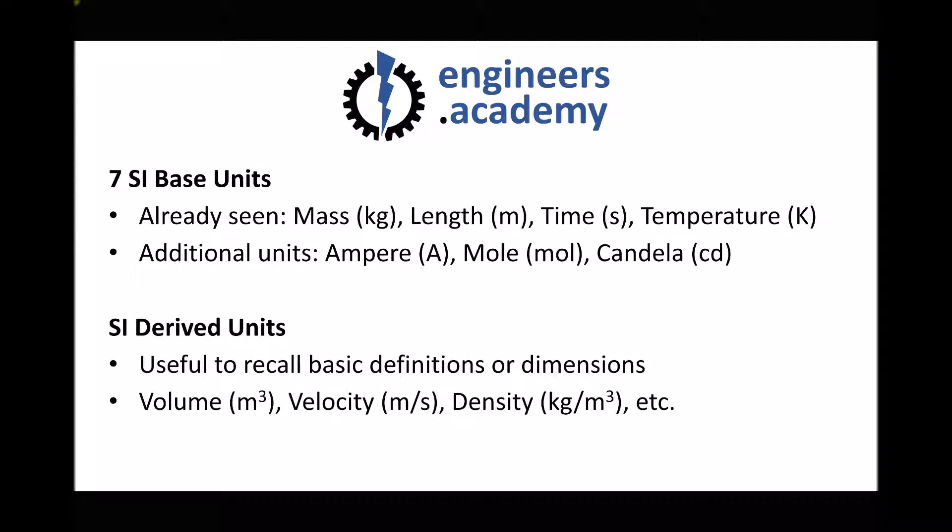We then have SI derived units. It's useful to recall the basic definitions from dimensional analysis: volume is a length cubed, velocity is distance travelled per unit time, and density is mass per unit volume. We can use our seven SI base units to determine the units for each of these. Volume is a length cubed, and since the SI unit of length is metres, the SI unit of volume is metres cubed. Velocity is length per unit time, so the SI unit is metres per second. Density is mass per unit volume, so the SI unit is kilograms per metre cubed.